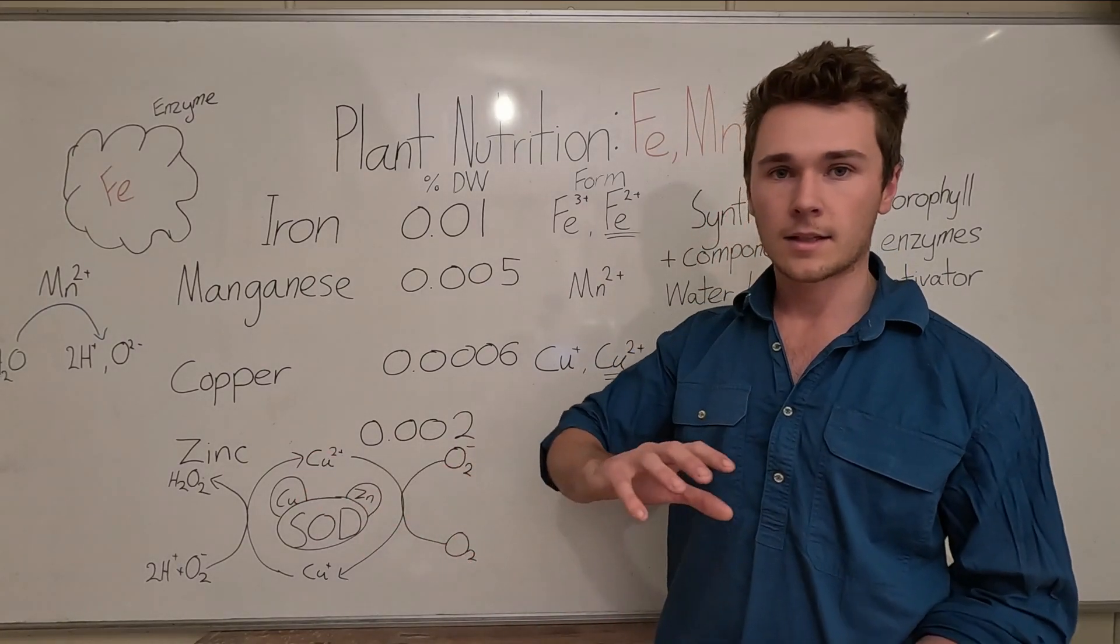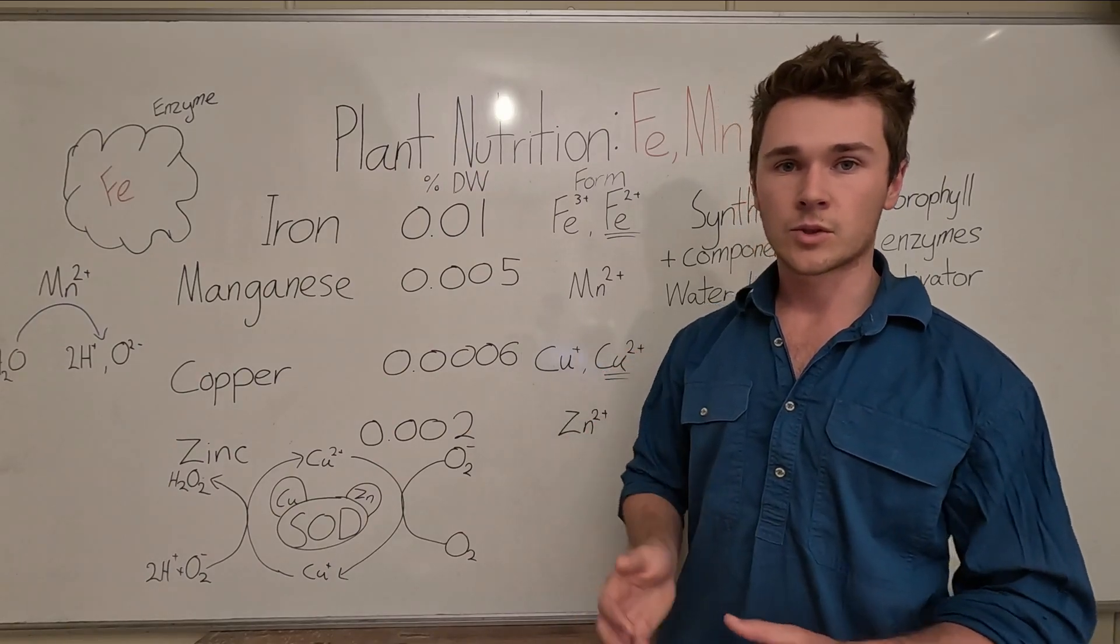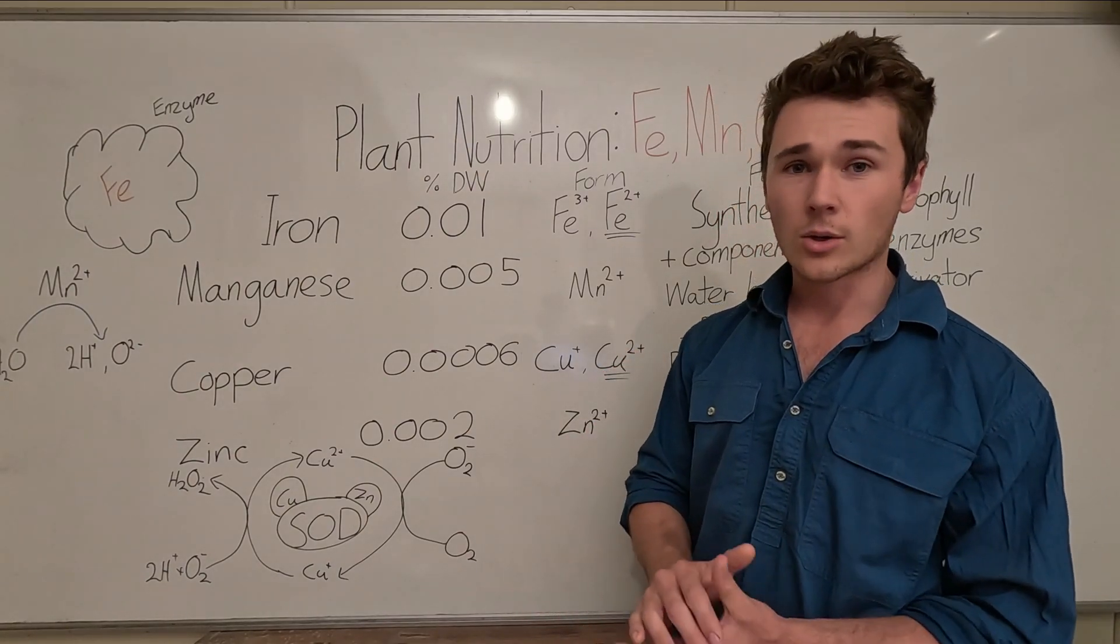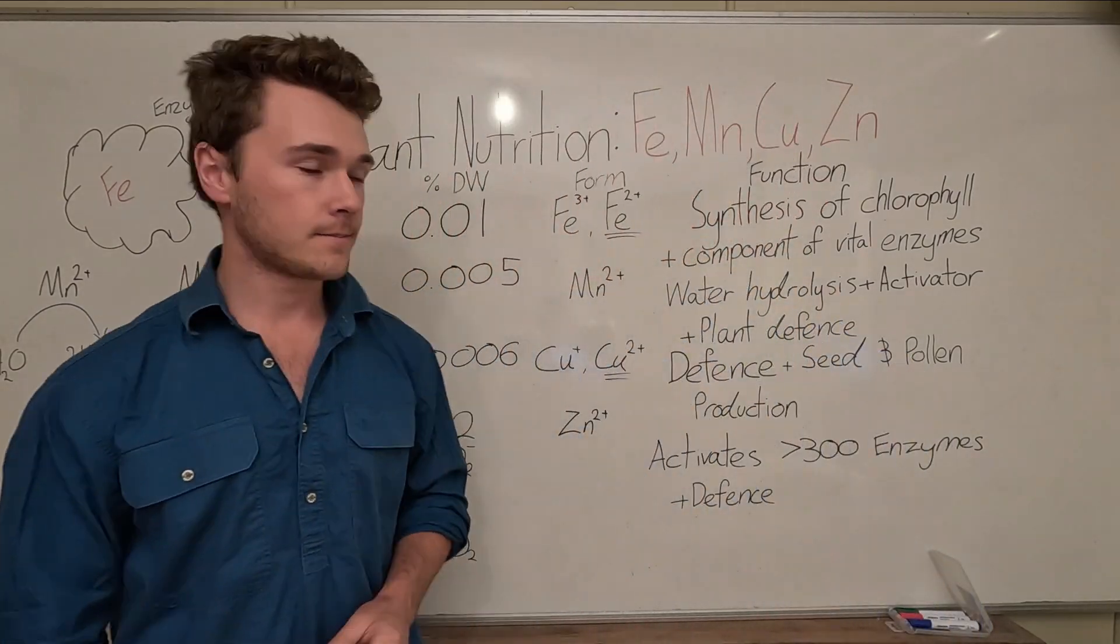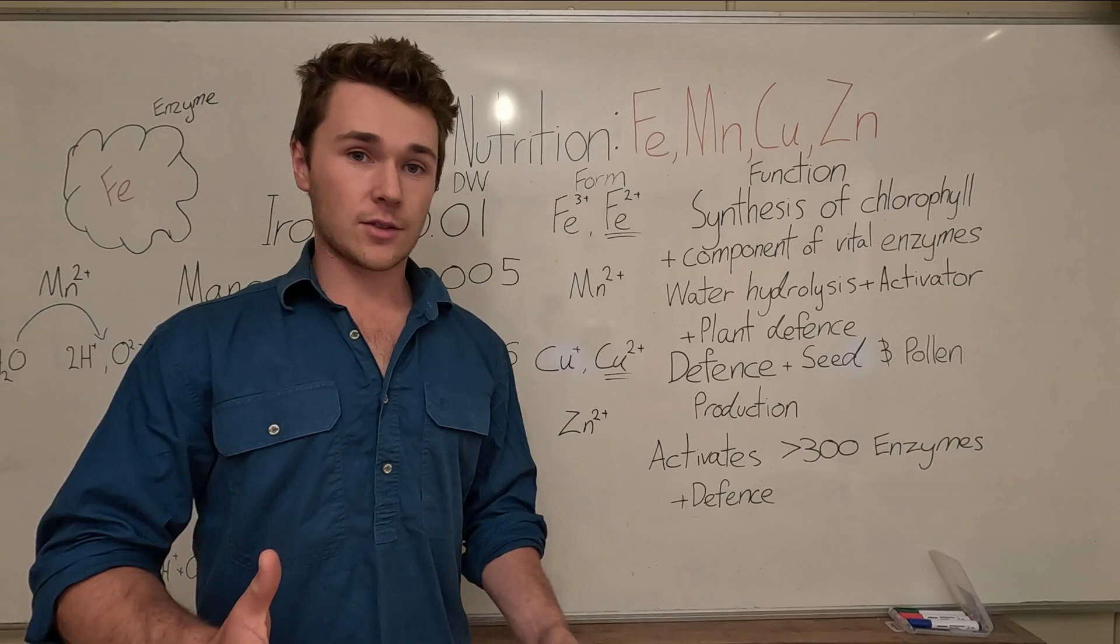This way basically we can get rid of two free radicals out of our plant which is causing damage and turn it into something that's less harmful. So this is a way that the plant can protect itself from stress and all stress is basically oxidative stress which is these free radicals roaming around in our plant.